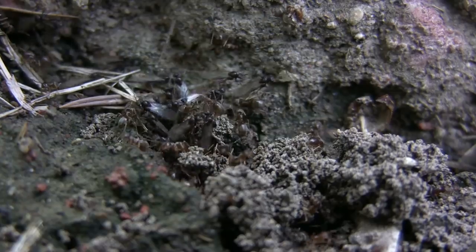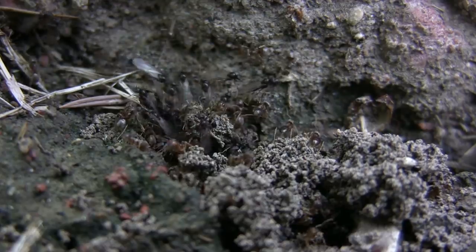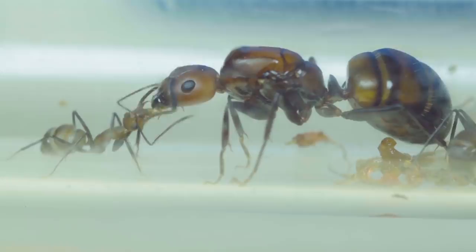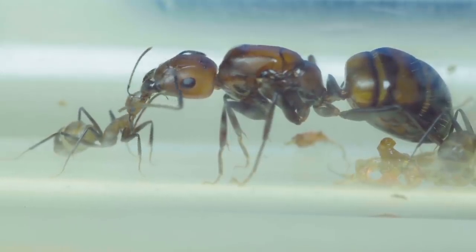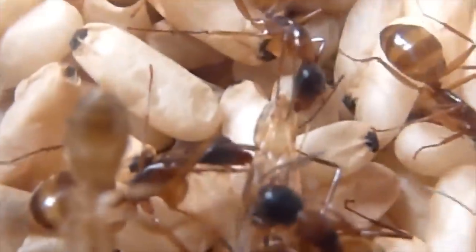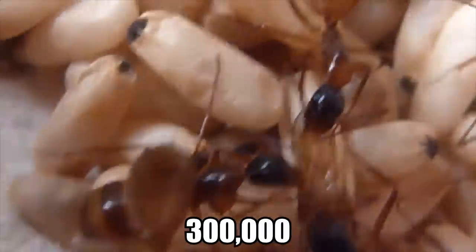Ants. A princess ant becomes a queen after mating when she is ready to start her own colony. During the mating process, a male provides a female with all the sperm she will need for the rest of her life, and she will be able to fertilize her eggs whenever she wants. Her first task is to find a proper nesting site where she lays as many as 300,000 eggs, often to the tune of thousands per day.